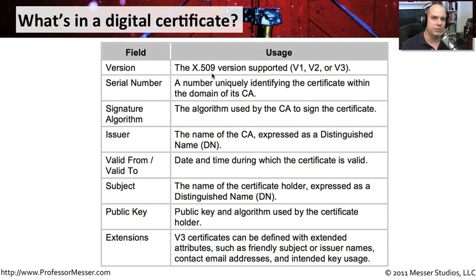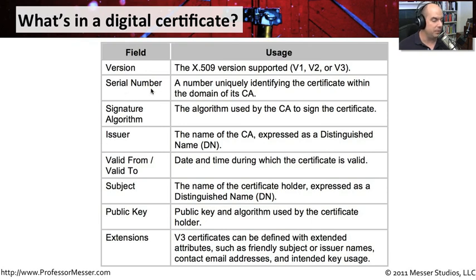Digital certificates are constructed in a very standard way, so that a certificate created on one machine can be understood by other machines. That format is called X.509. There are different versions for different types of X.509 certificates, but they generally follow this standard format, which includes serial numbers, signature algorithms, who issued the certificate, validity time frames, a subject, a public key, and extensions.